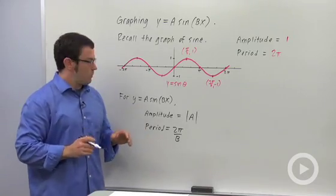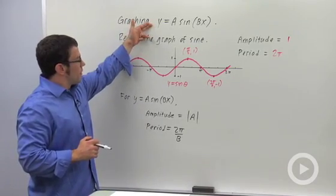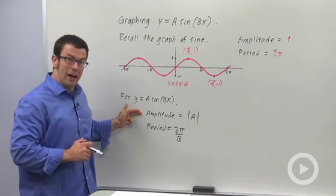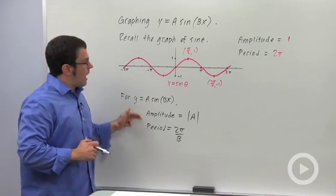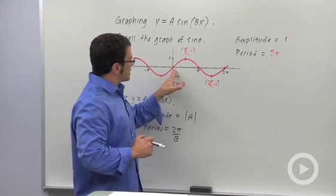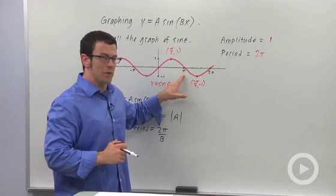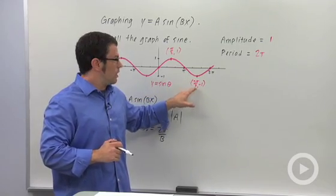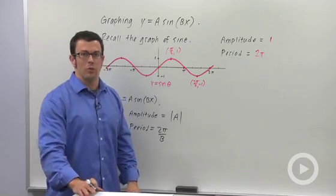Just to recap, when you're graphing functions of this form, remember the amplitude is the absolute value of a. Period is 2π/b. And remember your key points: (0,0), (π/2, 1), (π, 0), (3π/2, -1), and (2π, 0). These key points will get you through a lot of graphing.